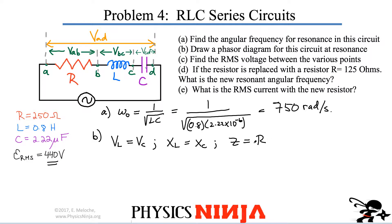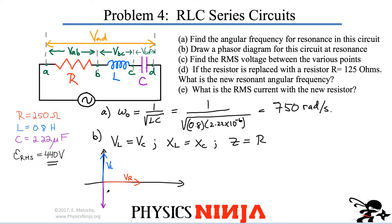Let's draw the axes for our phasor diagram and draw the vectors — we'll calculate their magnitudes in just a moment. We have a voltage across the resistor along one axis. The voltage across the inductor leads by 90 degrees, and the voltage across the capacitor lags by 90 degrees with respect to the resistor.